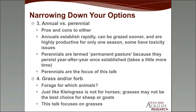Grasses or forbs are your next option to narrow down. Consider what animals you're catering to — cattle are grazers so they'll prefer grasses. Klein grass, for example, is a cow-only grass. Grasses may not be the best choice for sheep or goats. I do appreciate the addition of legumes to diversify the system in both introduced and native pastures, but the focus today is on grasses.